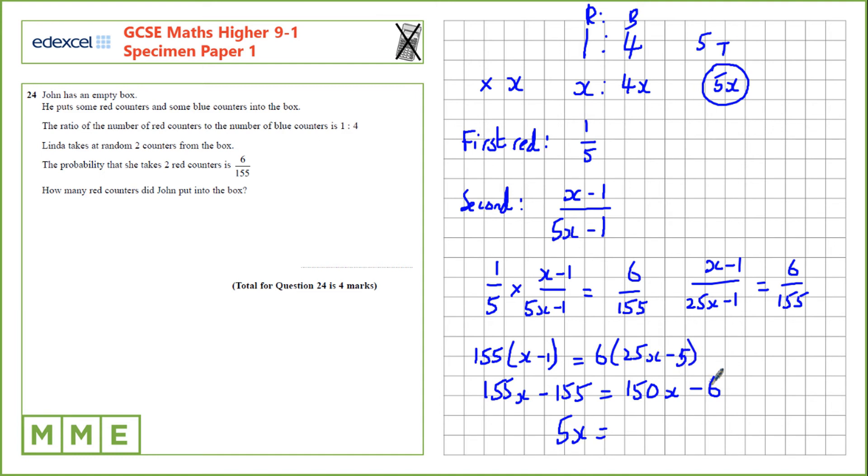Sorry, this should be 5 there. So that would be minus 30. 5x equals 125. So, x is 125 divided by 5. 25.